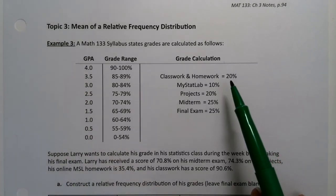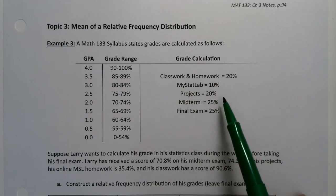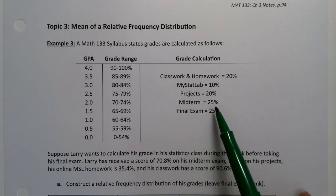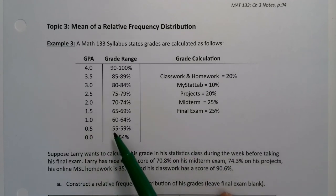The grades are calculated based on classwork, which is worth 20%, MyStatLab is worth 10%, projects 20%, midterm exam 25%, and the final exam 25%. Those are weights, relative frequencies, percents. You'll have grades over here, and then you'll be able to figure out your grade overall in the class.